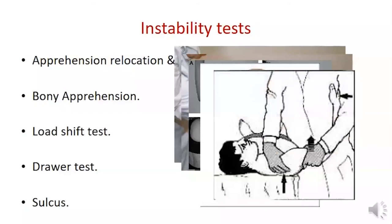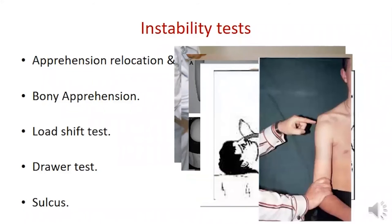The drawer test is performed with the patient supine and the arm abducted to 60 degrees; the examiner applies axial force to hold the arm in neutral rotation and translates the humeral head anteriorly and posteriorly. Grade 1 is translation over the rim, grade 2 is translation that spontaneously reduces, and grade 3 is dislocation without spontaneous reduction. The sulcus test is performed with the arm adducted — the arm is pulled down and the examiner measures translation from the acromion: 1+ for one centimeter and 2+ for two centimeters.